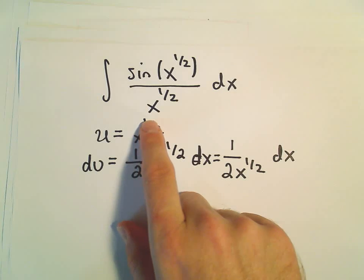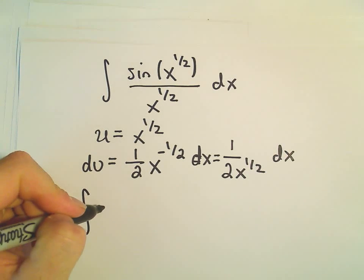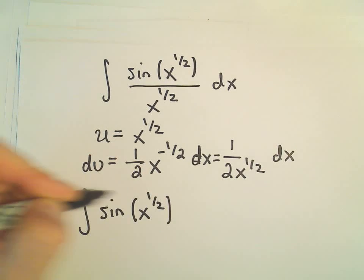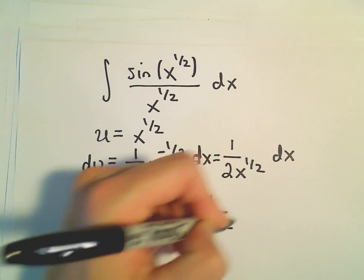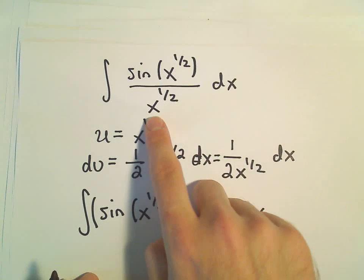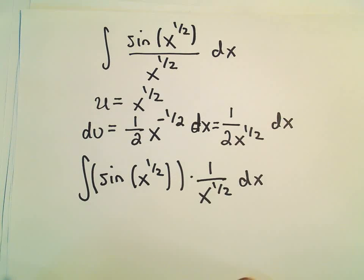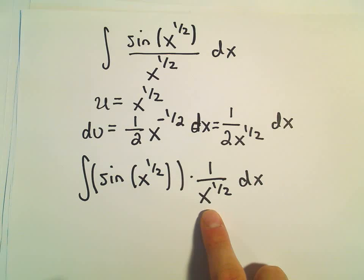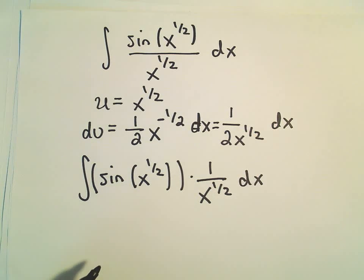And that's really what we have in here. We could think about even breaking this up originally and writing it as sine of x to the 1 half. And then all of that is being multiplied by 1 over x to the 1 half. All right, we can just sort of pull this off to the side. So there I am just rewriting it, hopefully making it a little bit clearer that we are 1 over x to the 1 half dx. That's almost what we have right here.